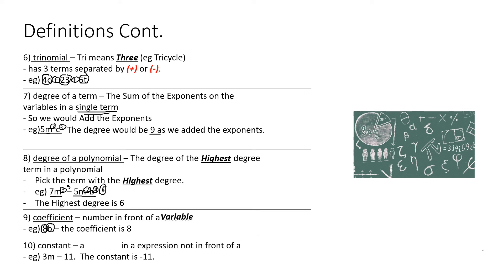Number 10, Constant: a number in an expression not in front of a variable. Example: 3m minus 11 — the constant is negative 11. Here m is the variable, 3 is the coefficient, and negative 11 is the number not in front of a variable.